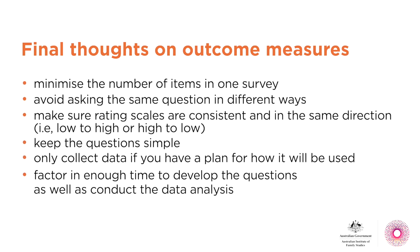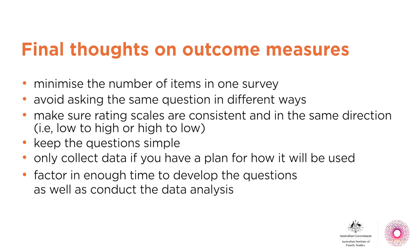Before we finish with outcomes measures, we have some final tips. Minimise the number of items in one survey — keep it as short as possible. Avoid asking the same question in different ways. Make sure your rating scales all go in the same direction — either high to low or low to high. Keep questions as simple as possible. Only collect data if you're going to use it — there are ethical implications. Factor in time to develop the questions as well as to analyse the data.